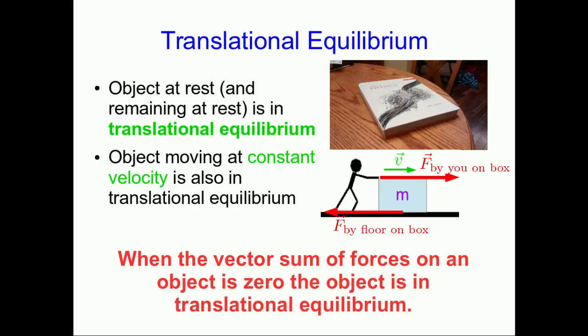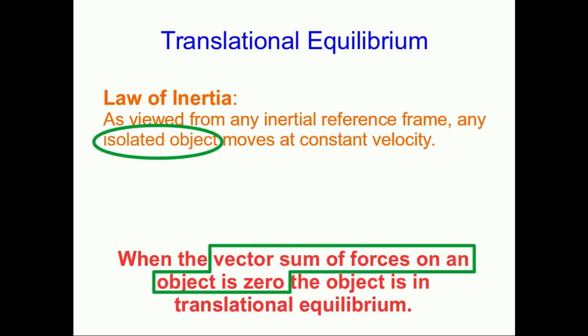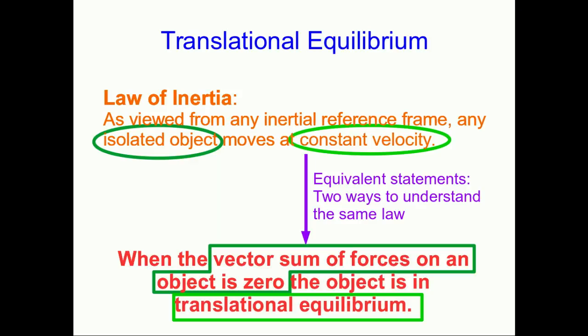We've seen this idea much earlier in the course in another disguise. Think of the law of inertia. As viewed from any inertial reference frame, any isolated object moves at constant velocity. Well an isolated object is an object that isn't interacting with the environment, except we now see another possibility. If all the interactions cancel each other out, that's the same thing as not interacting with the environment. These two laws here are just equivalent statements.